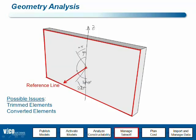We have four surface types for walls. For slabs it was easy — everything that was vertical was considered an edge. But for walls we have three types: reference side, ends, and opposite reference side. The position of that vertical surface area is determined based on its location compared to the reference line.